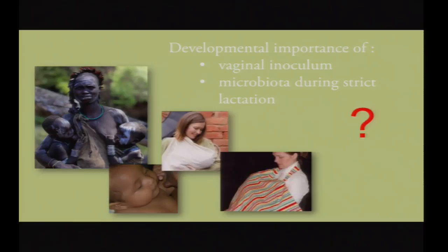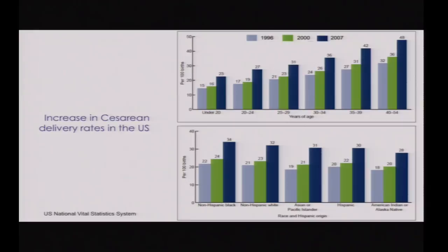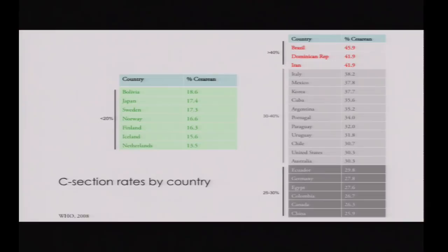In humans, we don't really know the importance of vaginal inoculum or early microbiota during strict lactation. We do impact both through c-sections and through breastfeeding practices. This graph shows the increase in c-section rates in the U.S. from 1996 to 2007 across different age groups and ethnicities — everywhere the increase has been about 50% in this period.